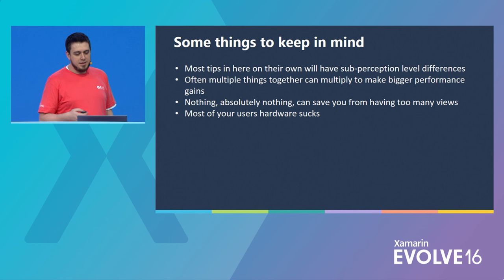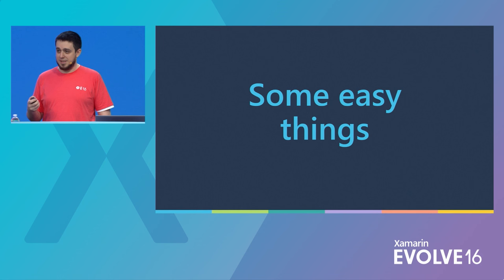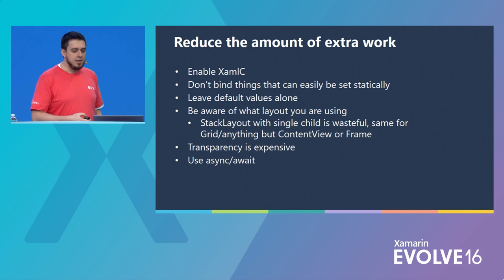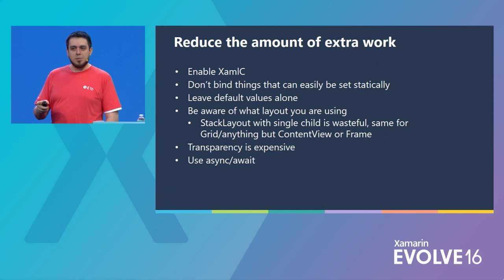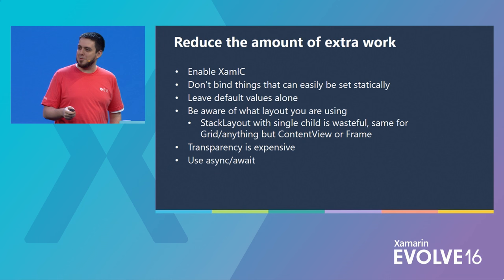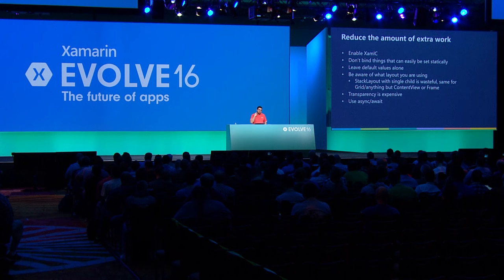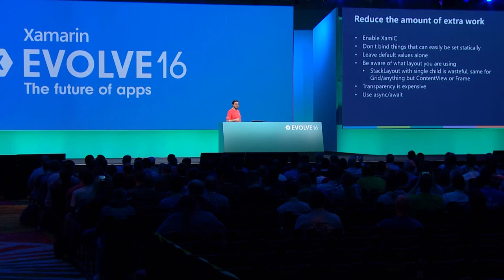There are some easy things you can do that you should be able to go home right now and turn on in your app and get some free wins. The very first in Xamarin.Forms is to enable XAML-C. It's just an attribute you put in the top of your AssemblyInfo.cs, and you can turn it on globally. Definitely turn that on.